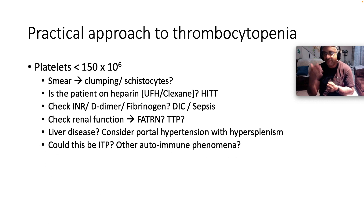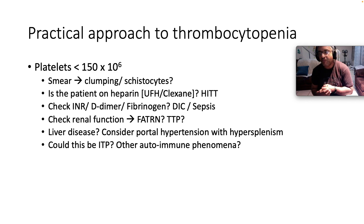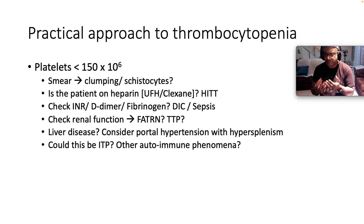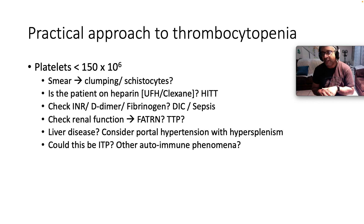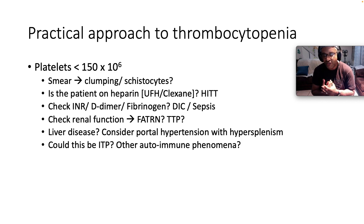Lastly, if all of the above haven't really yielded much in the way of the etiology, consider: could this be immune thrombocytopenia? And then look for other autoimmune stigmata, especially supporting autoimmune disease, notably systemic lupus erythematosus. Is there alopecia? Are there sicca symptoms? Are there oral ulcers? Is there non-erosive polyarthritis? Is there serositis? Look into the serology.